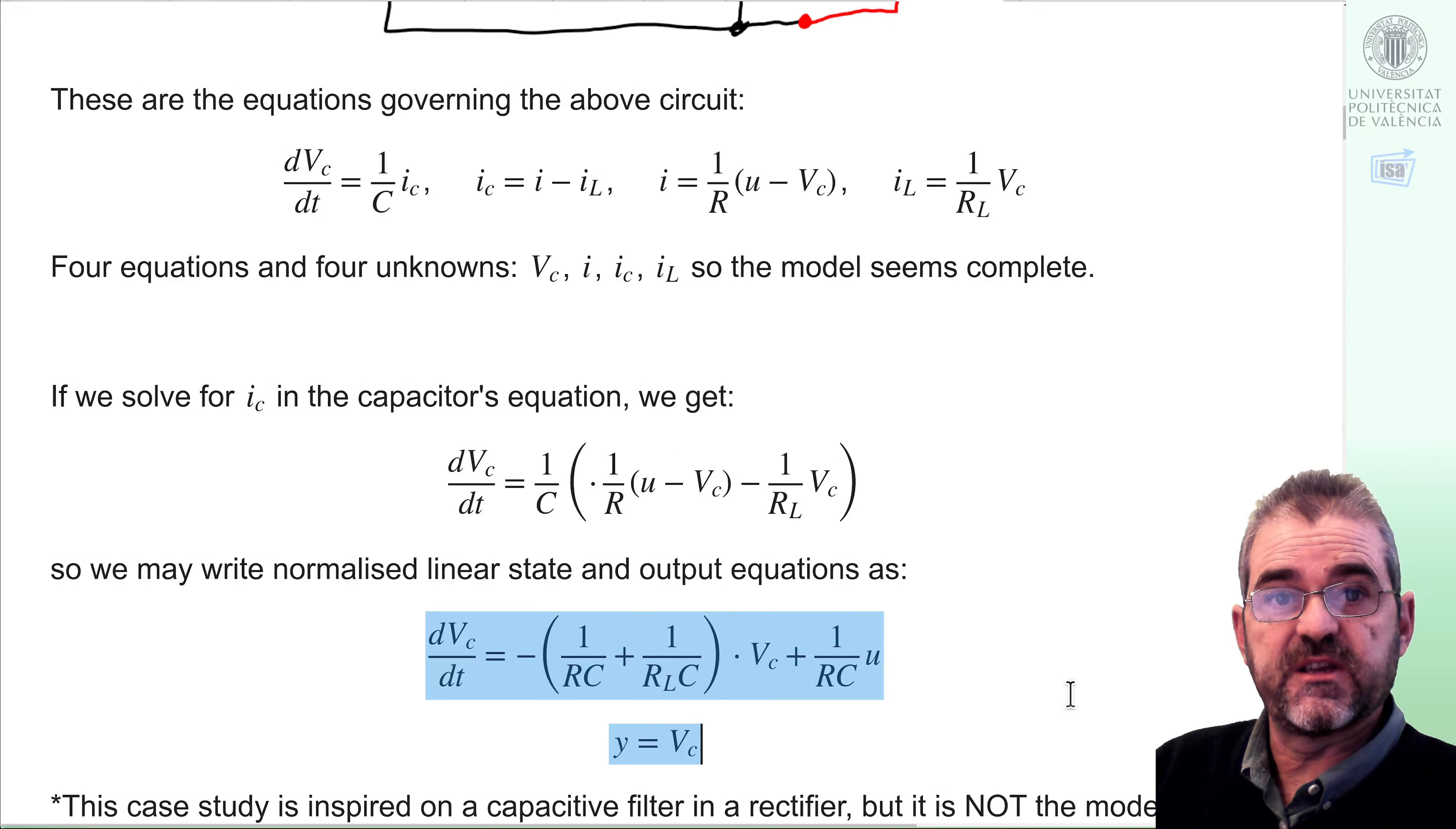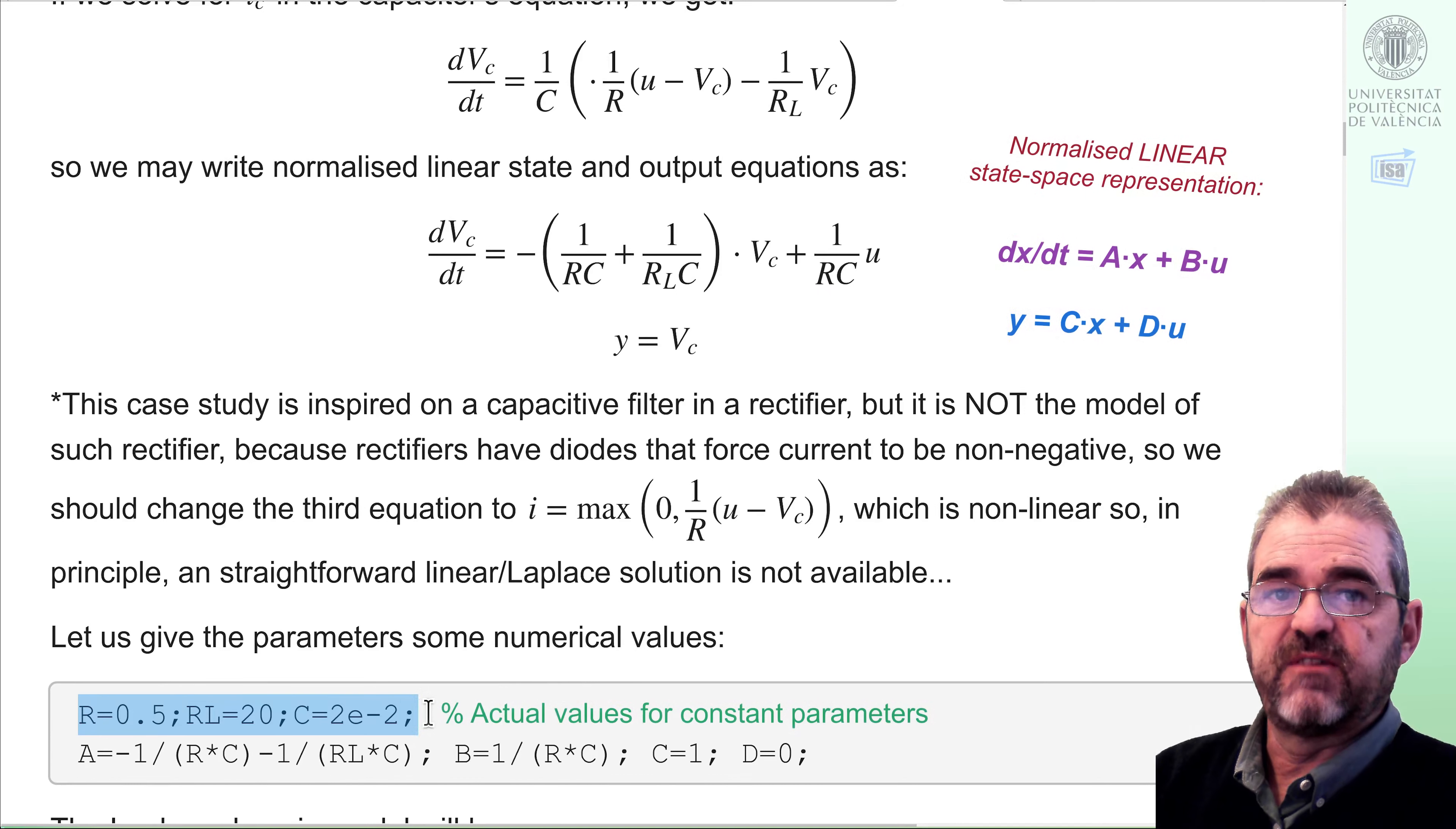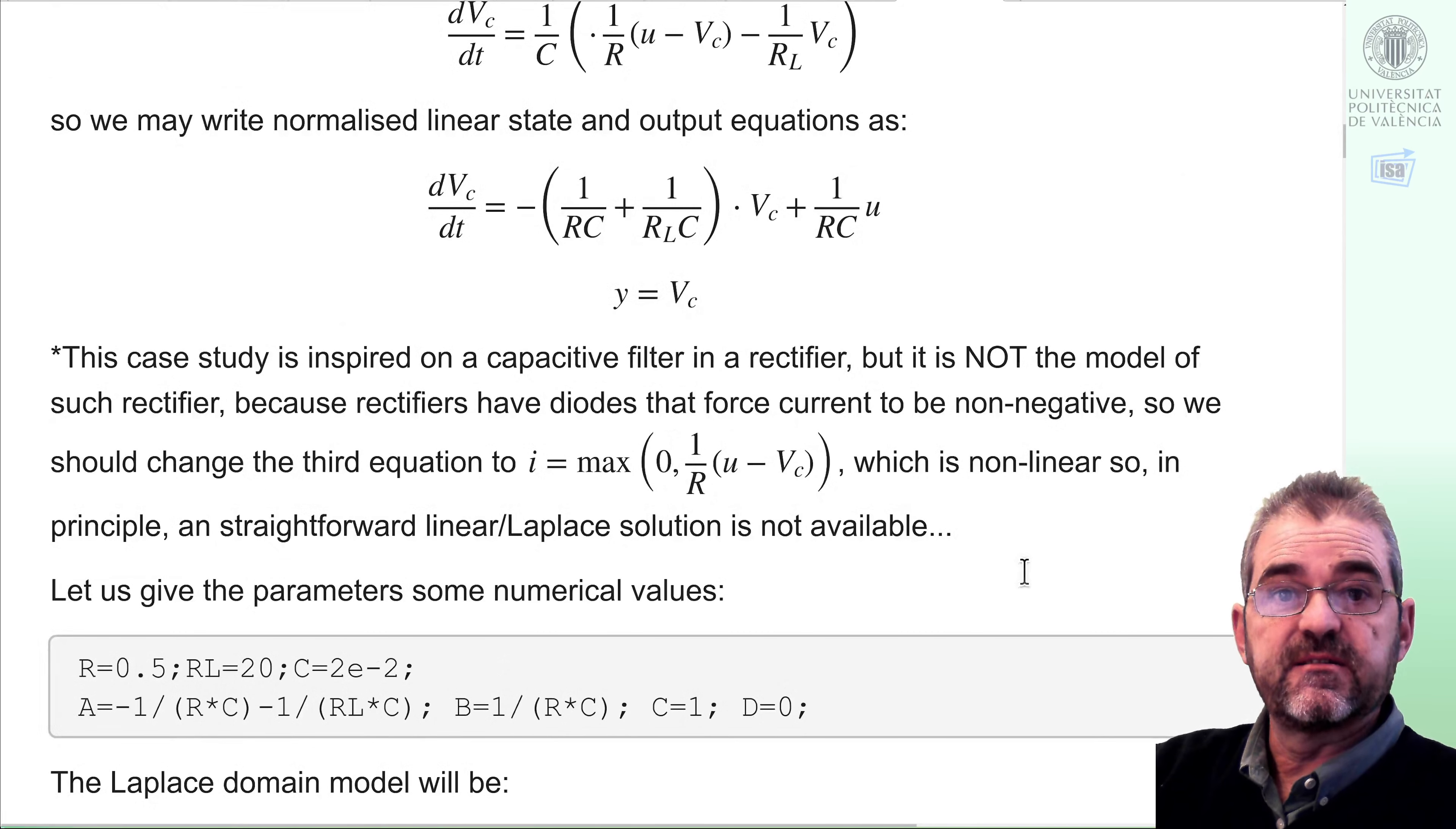And in order to simulate something in MATLAB, we will give the parameters some numerical values. So the two resistor values and capacity will be set to these randomly chosen values. And hence, this thing, which is the A matrix, will be computed like this. Likewise, B matrix. And the output equation simply says that I must simulate one times the state variable plus zero times the input. With this, I would be able to create a state space object in the control system toolbox.